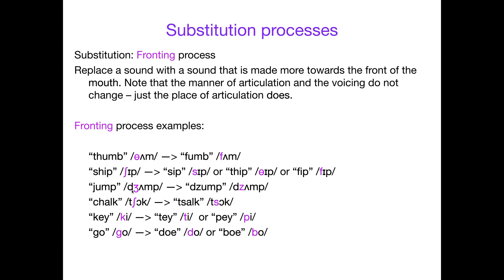Jump contains an affricate — the 'duh' plus 'ja', which is post-alveolar and voiced, just like 'sha'. A very common thing that happens is moving it one position forward: changing 'ja' to 'za', so jump comes out as 'dzump'. Chalk has the 'sha' of the affricate, and moving it to the alveolar position 'sa' gives us 'sok' — you're just fronting the second part of that affricate.